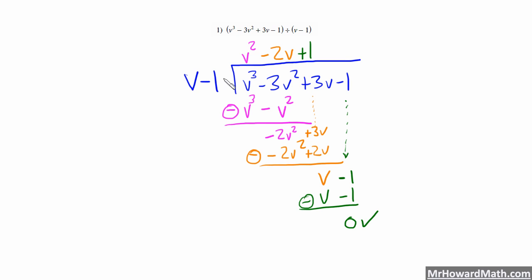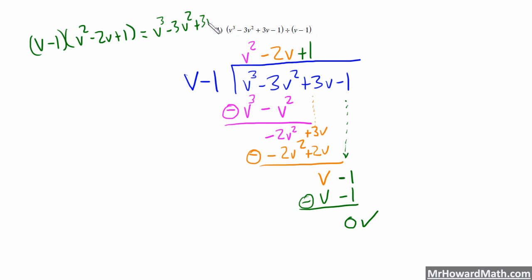So this means that v minus 1 times v squared minus 2v plus 1 equals v cubed minus 3v squared plus 3v minus 1. If you multiplied this out, you would get this — remember that multiplication is the opposite of division. We can actually put this in our calculator and check it. I'm going to show you how to do that.